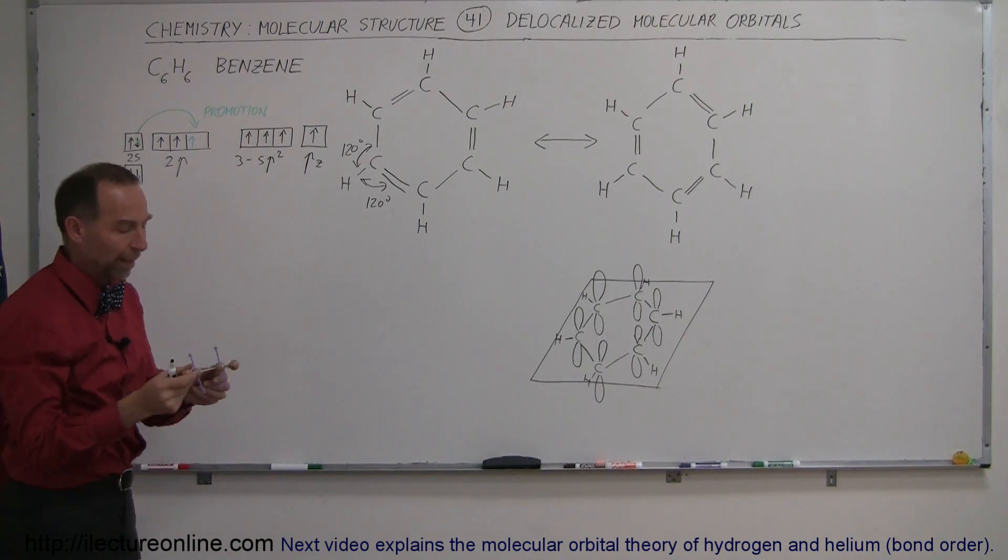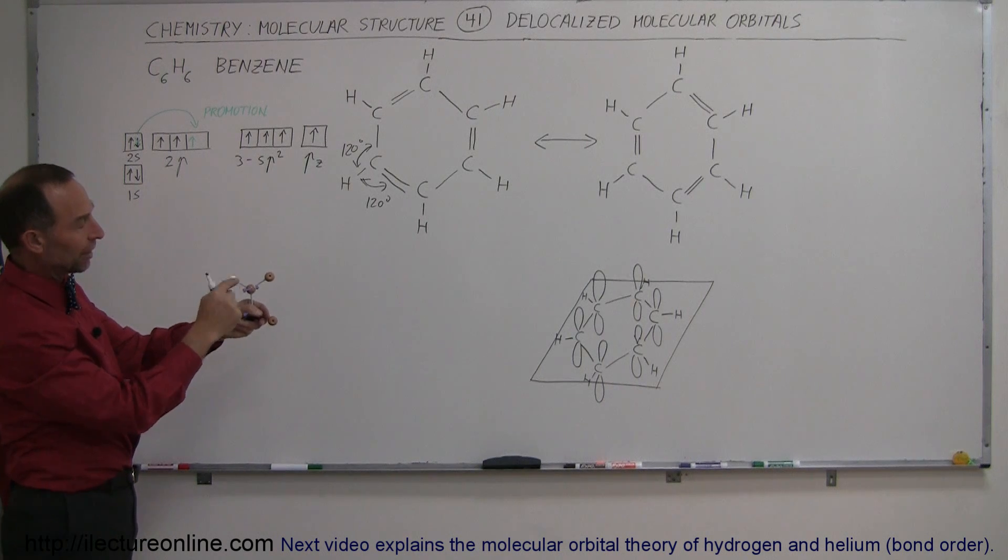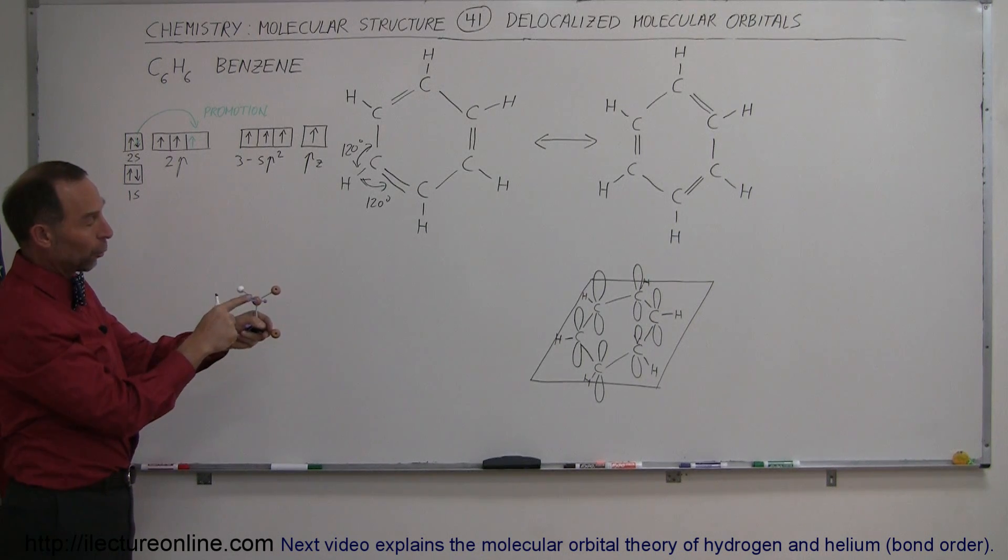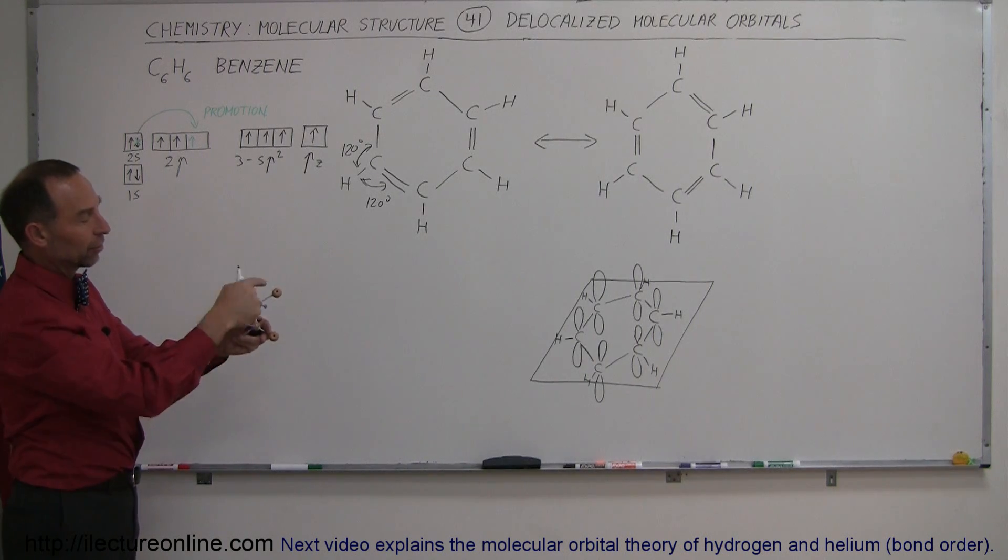If you just take a look at a single carbon, notice that it has three hybridized orbitals, sp2 orbitals as we call them. One that has a hydrogen connected to it, and then the other ones that have carbons connected to it.